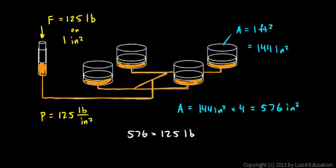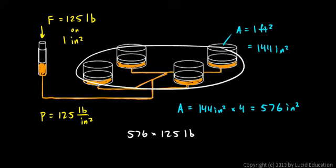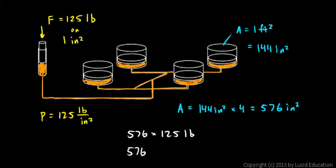There's another way to see that same calculation. You can think of a total area on all four of these cylinders is 576 square inches times the pressure of 125 pounds per square inch. That's the pressure. And when you set it up that way, you can see the square inches mathematically cancels out, leaving you with a force in pounds. And 576 times 125 comes out to 72,000 pounds,